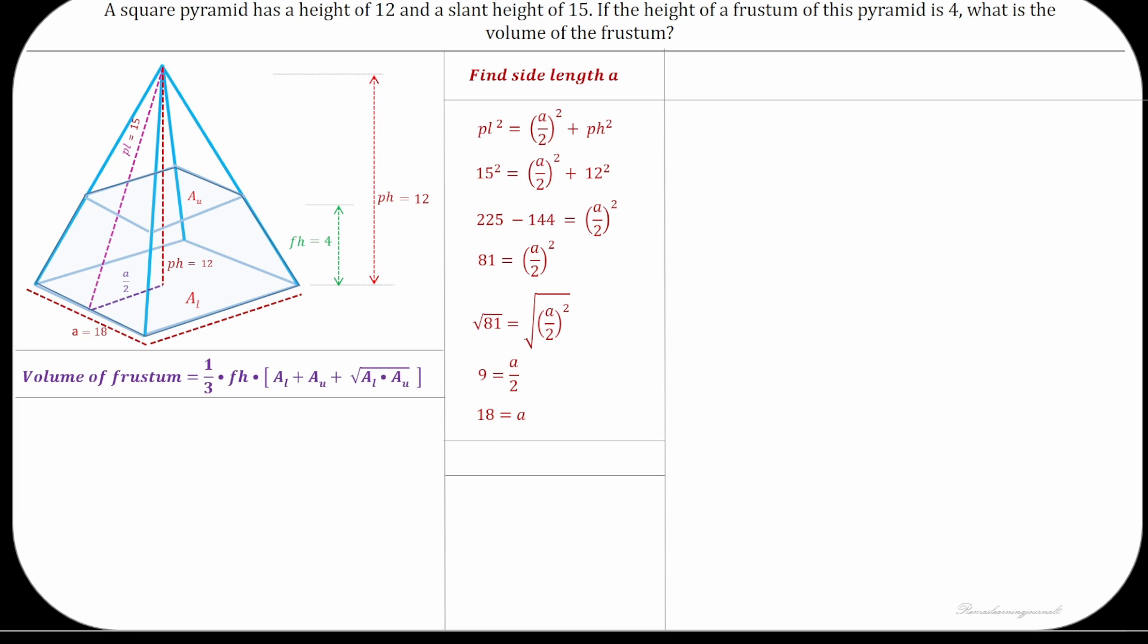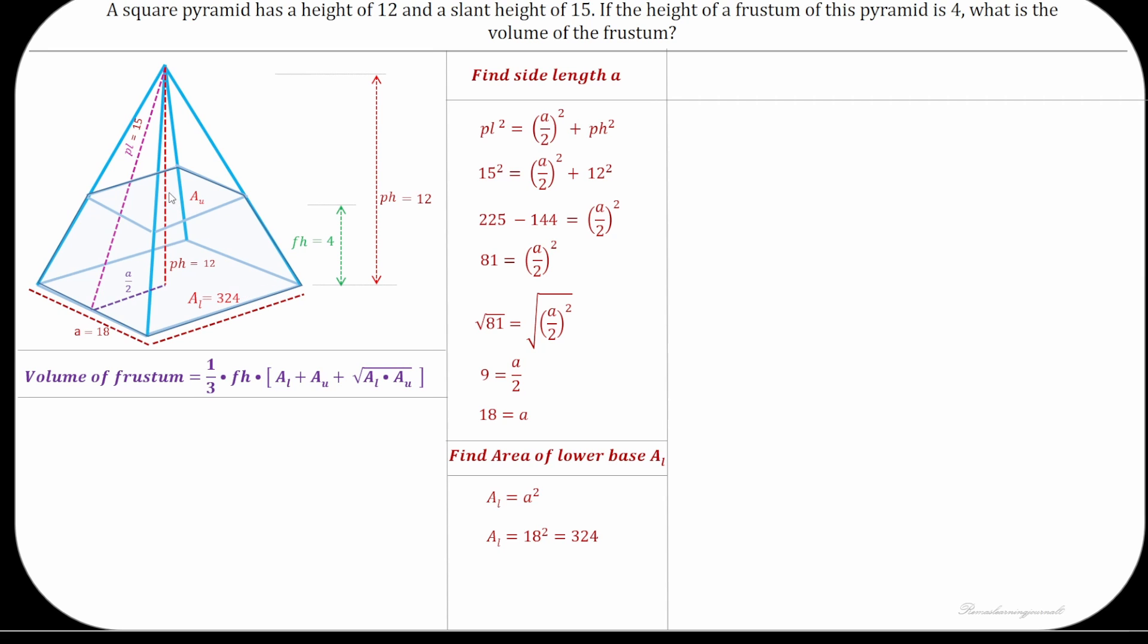Since we have the side length of lower base, we can find the area of lower base that is square of side length which is 324. Now let's find the area of upper base using similar solid rule.